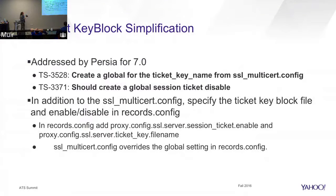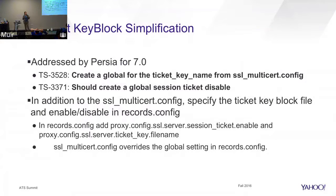One of the things that happened is Persia worked on SSL ticket key block simplifications. We've talked about this over a number of summits. The original ticket key block definitions were created by LinkedIn and specified in the SSL multi-cert file, which is really more resolution than most people need. For most implementations, just having one ticket key block file that defines a series of tickets is sufficient for all domains. It's easier to specify that one file in records.config, and that's what Persia did — two bugs there. She also added a global enable.